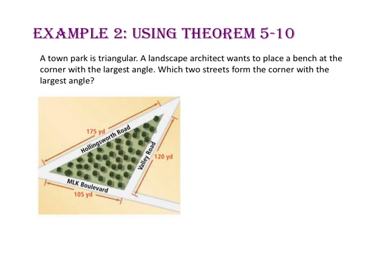In example 2, we will use theorem 5-10. A town park is triangular, and a landscape architect wants to place a bench at the corner with the largest angle. Which two streets form the corner with the largest angle? Since the largest angle lies opposite the longest side, we look for the longest street. Hollingsworth Road is 175 yards, making it the longest road forming the triangle, so the angle opposite it is the largest. This angle is formed by MLK Boulevard and Valley Road.